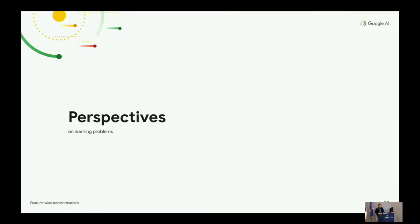One of my goals in this lecture is to get you to think about and recognize application opportunities for feature-wise transformations. Another objective is to get you to think about learning problems that have a more complex structure than the usual input-output structure found in supervised learning. The perspectives I will present are all valid, but they don't necessarily suggest the same inductive biases or the same architectural features.